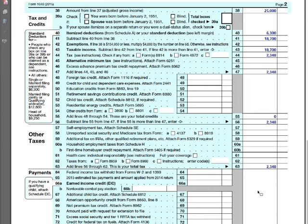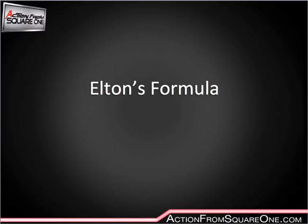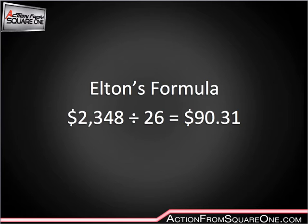That is his total tax liability — the amount he's going to be responsible for as a dependent. He has no credits to qualify for, so total credits is zero. Total tax: $2,348. Line 63 total tax: $2,348. Remember, he gets paid biweekly — which is 26 times a year. So he's going to divide that by 26. Each paycheck he is going to need to have withheld $90.31.